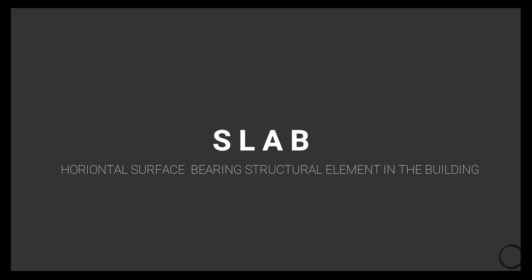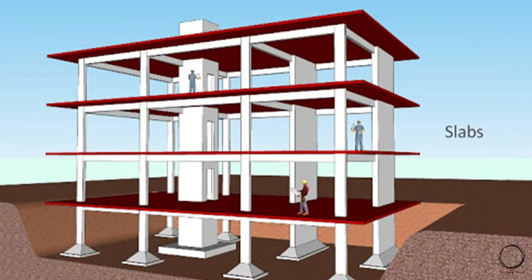Another term completing the structure is slab, which means a horizontal surface-bearing structural element in the building. As you can see, it is again marked in red. The slabs are the surfaces supported by both the columns and the beams.